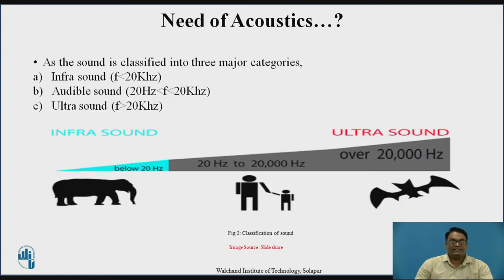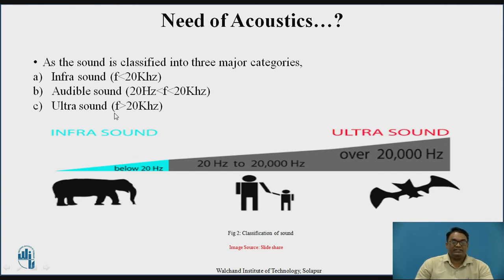Sound can be classified into three major categories. First is infrasound, where the frequency is less than 20 hertz, which can be heard by animals. Audible sound has a range of 20 hertz to 20 kilohertz and can be heard by human beings. Ultrasound has a frequency range much greater than 20 kilohertz and can be heard by flying bats and some species of birds.